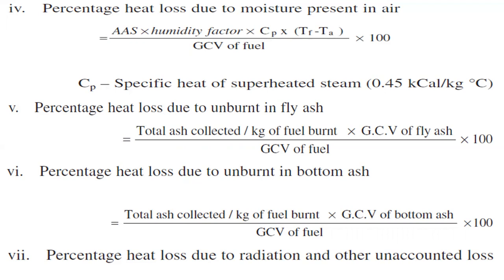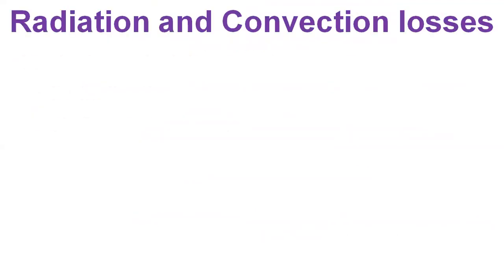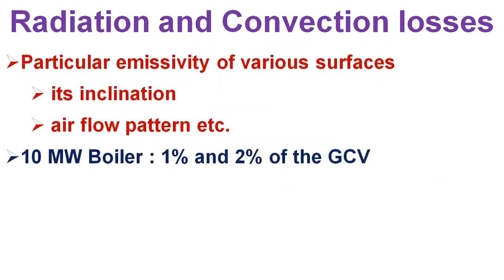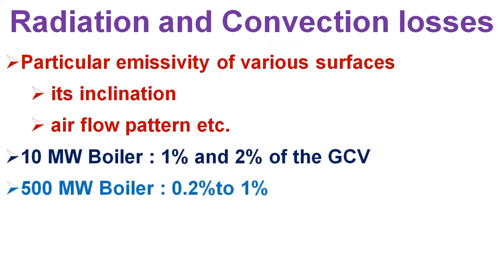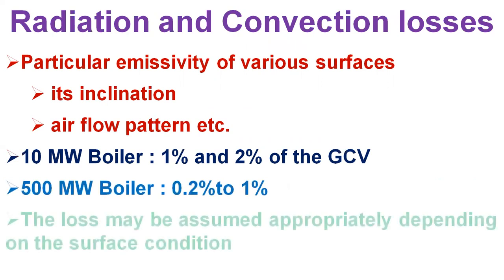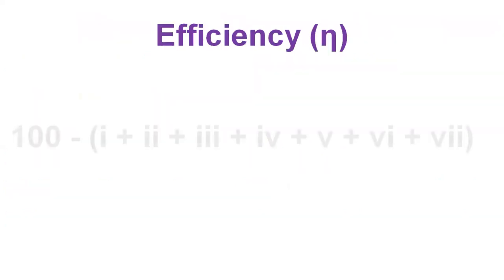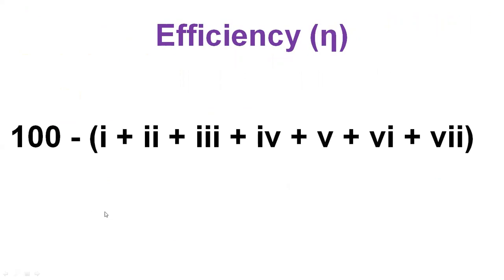Finally, the percentage heat loss due to radiation and other unaccounted losses: actual radiation and convection losses are difficult to assess due to emissivity of various surfaces, inclination, airflow pattern, etc. For a smaller boiler with capacity of 10 MW, radiation and unaccounted losses could amount to 1–2% of the GCV of fuel, while in a 500 MW boiler, values of 0.2–1% are typical. The boiler efficiency is then equal to 100 minus the sum of all these loss percentages.